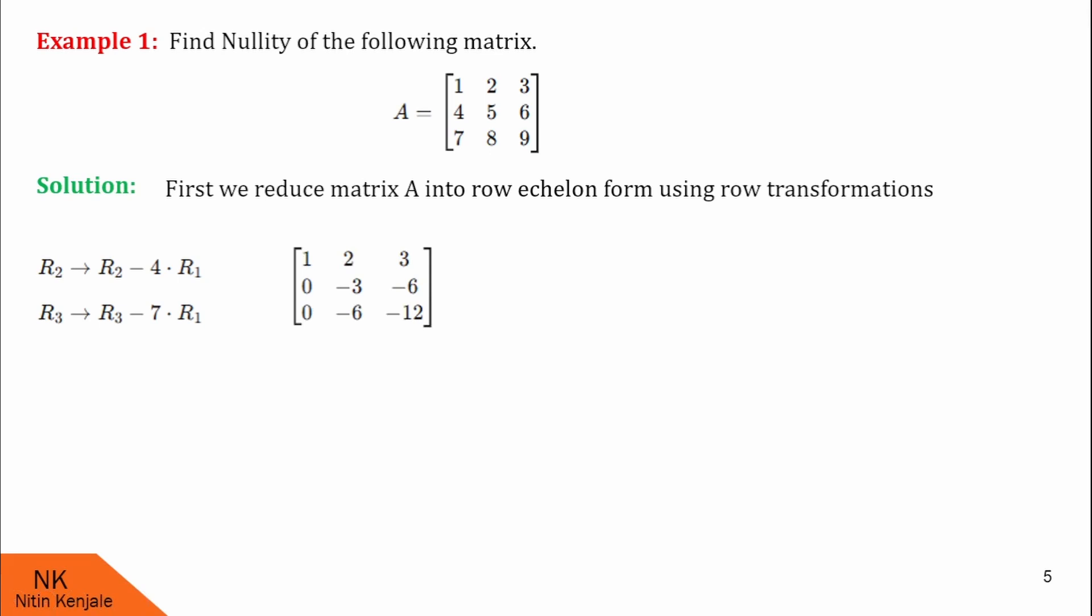By using which, we will transform this matrix into this. You can pause the video and check this calculation. Next, I will try to make 0 at this position using transformation R3 minus 2 times R2. By using which, this matrix now transforms to this.